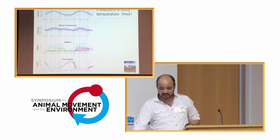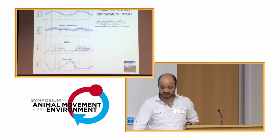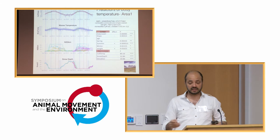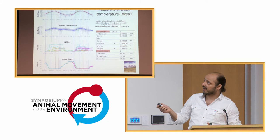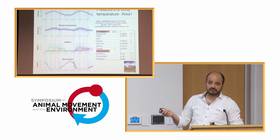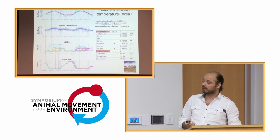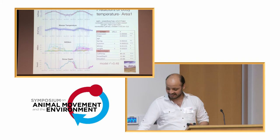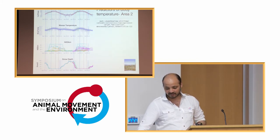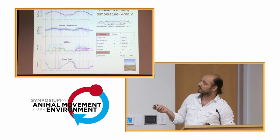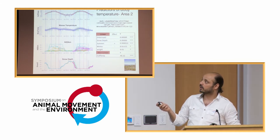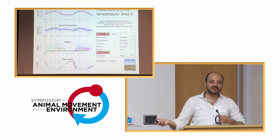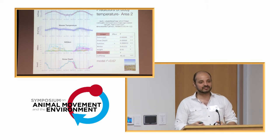Looking at predictors of body temperature — snow, elevation, slope, season — I ran separate models for each area because individuals were behaving differently (migratory, resident, nomadic). In area one, the more mountainous area, slope, age, season, weight, collar temperature, snow depth, and elevation together described a lot of variation but only about 50%, so there is more to dig into. In area two, closer to the coast, elevation and slope had less influence, but snow depth and collar temperature had much more, explaining around 68% of variation. So different things are going on in different areas — individuals acclimatize differently and respond differently to different cues.